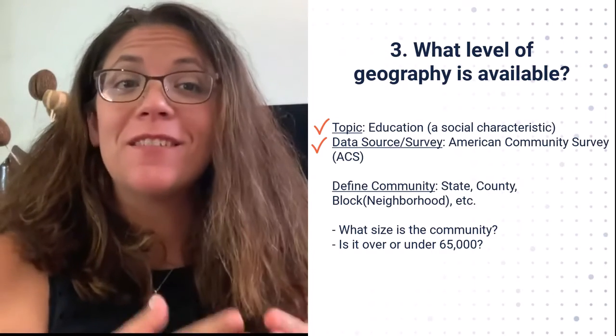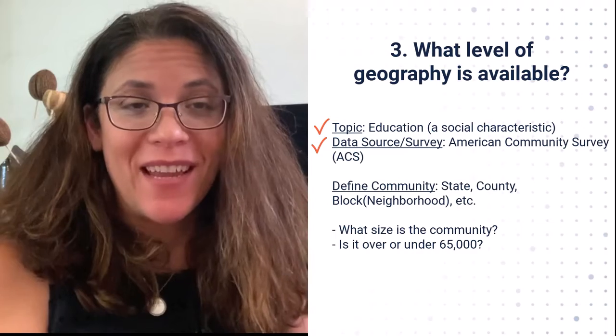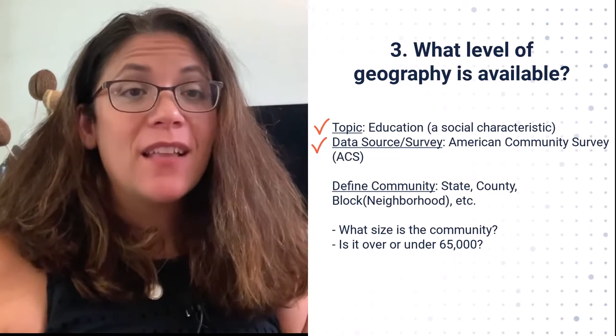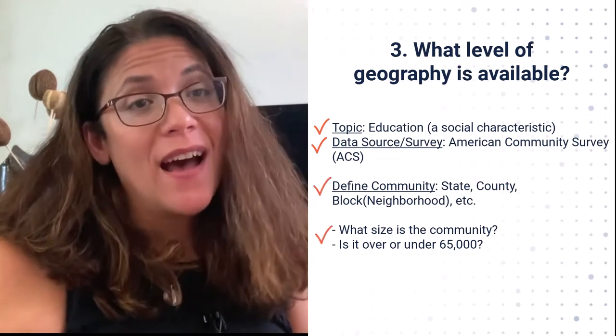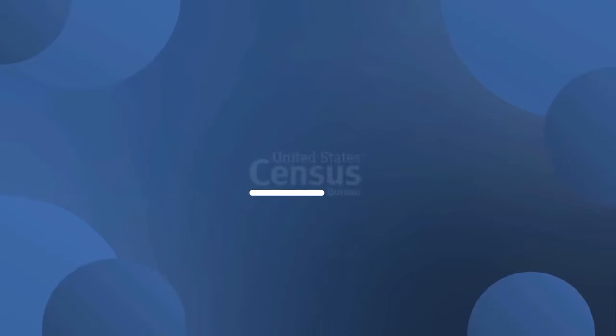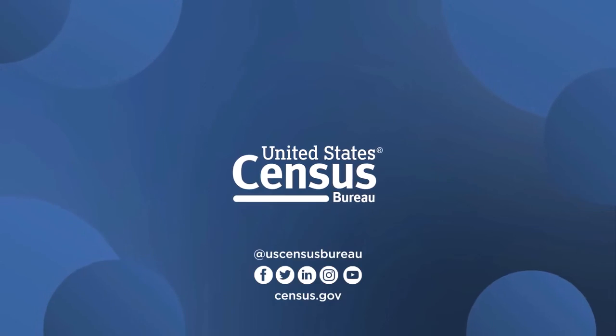I see. I have to define my community or my geography, meaning I have to pick if I'm talking about my city or my neighborhood. And if I want to pick my neighborhood, I have to know the size of the neighborhood or how many people live in it in order to pick the right data set. You got it. That's why understanding the three key elements is so important. Defining your geography is going to help you determine which data source and data set you are going to use. Thanks so much, Eric. This really helps me figure out what I need to know to get started.